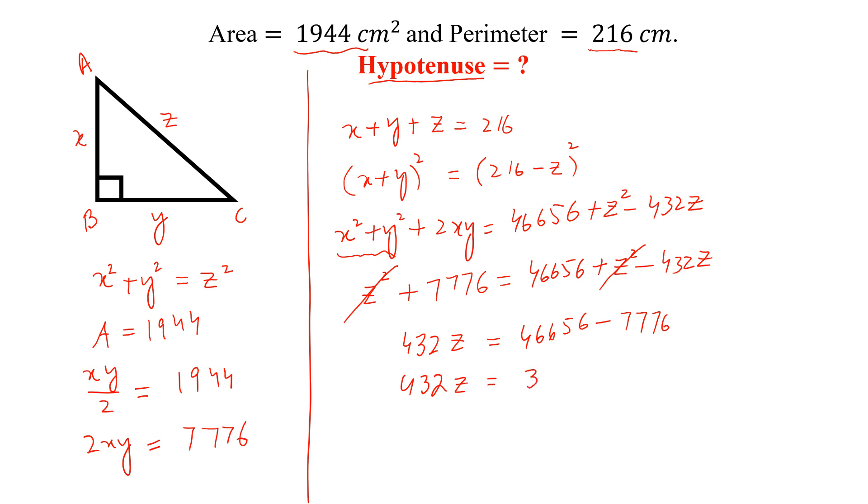Dividing both sides by 432, z is equal to 90 centimeters. Z is equal to 90 centimeters and the hypotenuse is equal to 90 centimeters.